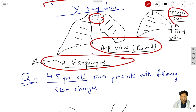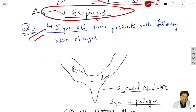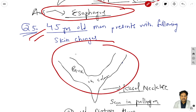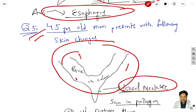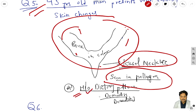Question 5: a 45-year-old man presents with skin changes. This is the person whose neck is black in color - that is called the Casal's necklace, seen in pellagra. So as it is seen in pellagra, the answer involves dietary history, dementia, and dermatitis.